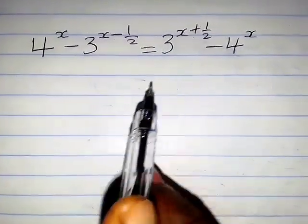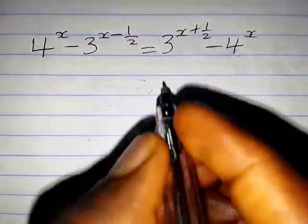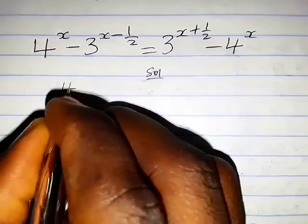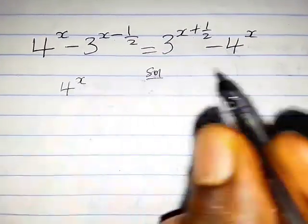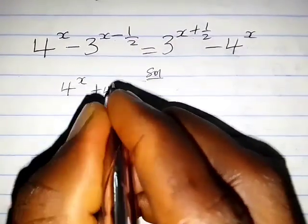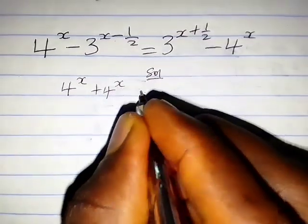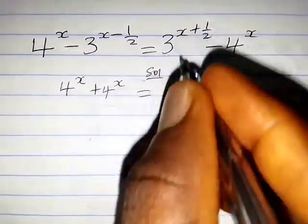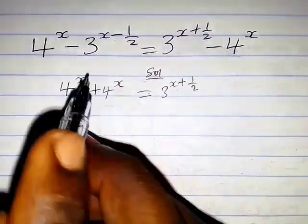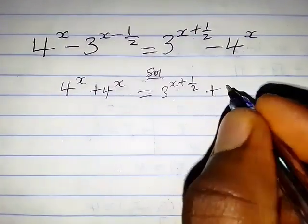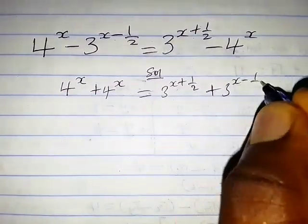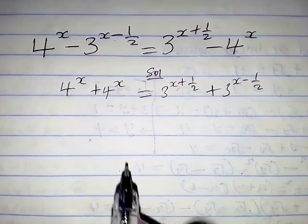How do we solve this exponential equation? We have 4 raised to the power x, and when this term comes to the left we have plus 4 raised to the power x, which equals 3 raised to the power x plus one-half, and when this term comes to the right we have plus 3 raised to the power x minus one-half. So now let's proceed further.